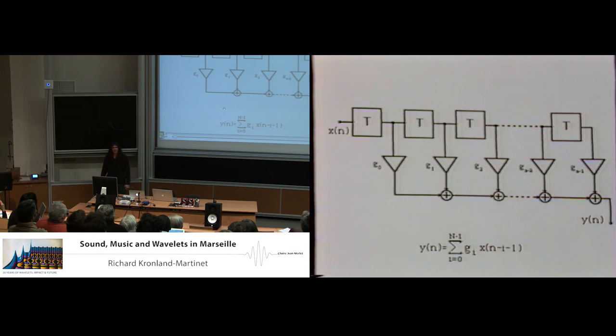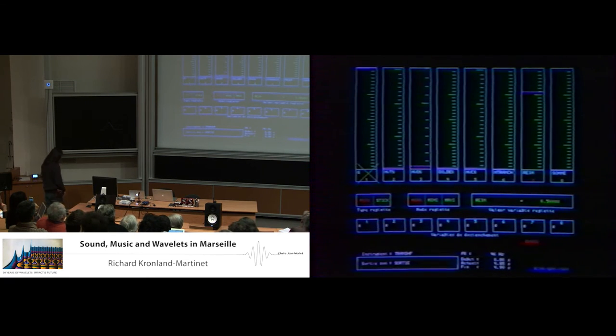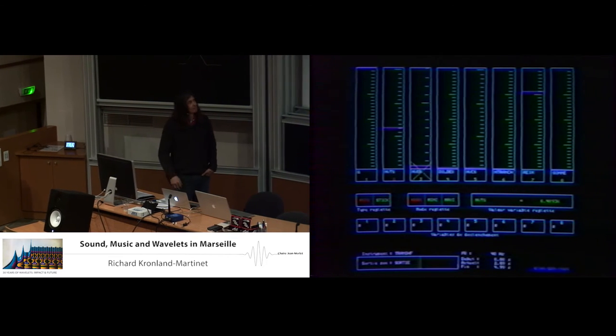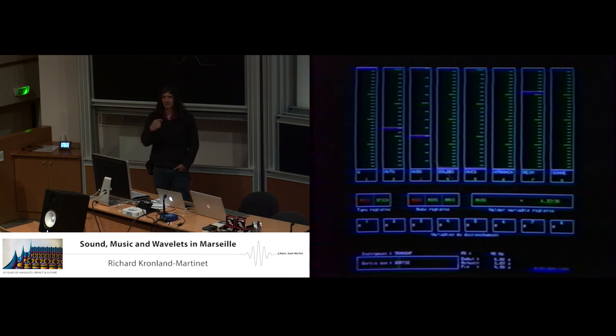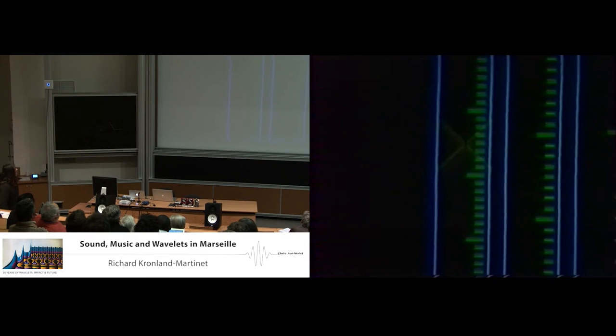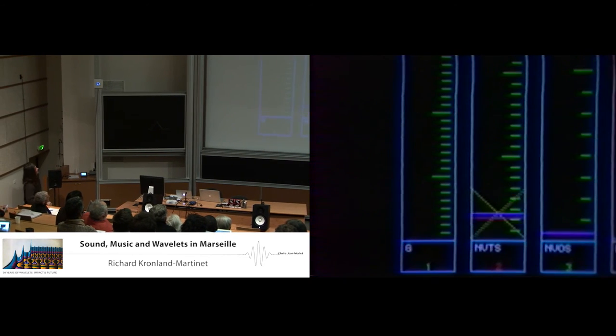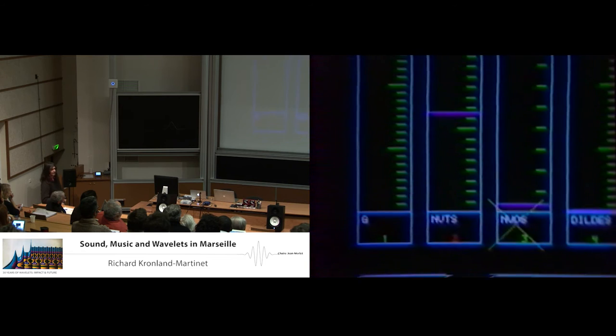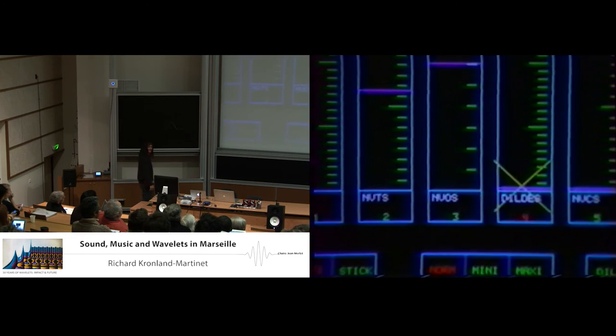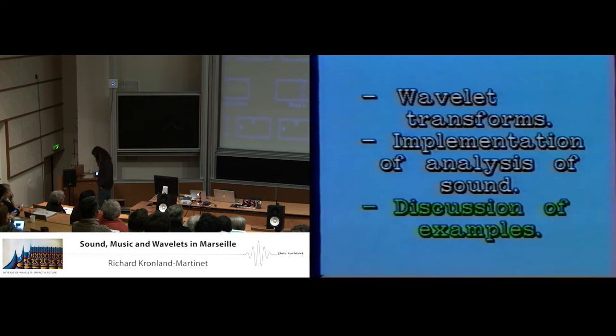The parameters of the transform can be input with the help of a mouse that moves around the settings. Now we modify the input level. Now we change the total number of voices. Here we give the number of voices per octave. And finally, we specify the initial value of the dilation parameter. Let us now look at the result.